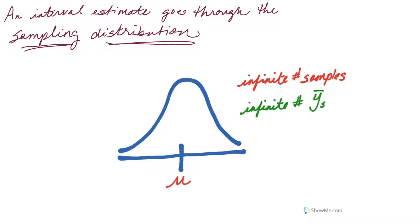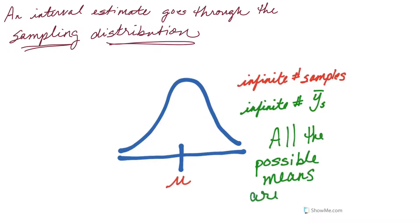So that means, if it's an infinite number of samples, then we also have an infinite number of sample means. Therefore, all the possible sample means are in there. This is a fact I want you to keep in mind. If it's based on an infinite number of samples, then we've calculated an infinite number of sample means, and it means all the possible sample means are in there — every single possible sample mean.